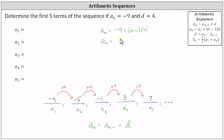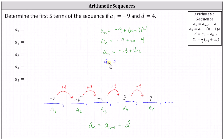Simplifying, we have a sub n equals negative nine plus four n minus four, giving us a sub n equals negative 13 plus four n. The benefit of this formula is we don't need the previous term to find any term in the sequence. For example, to find a sub four, n equals four, so a sub four equals negative 13 plus four times four, which is negative 13 plus 16, which equals positive three — which we can confirm is correct.